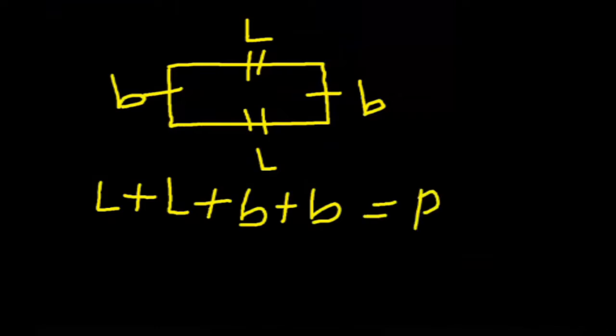From basic algebra, L plus L plus B plus B. L plus L, that is 2L. B plus B, that is 2B. This equals our perimeter. So this is the formula for the perimeter of a rectangle.